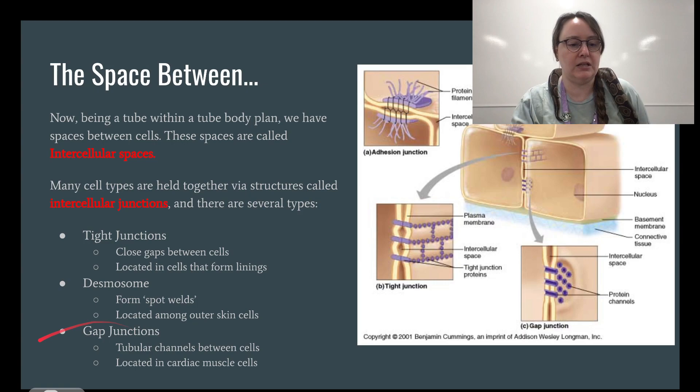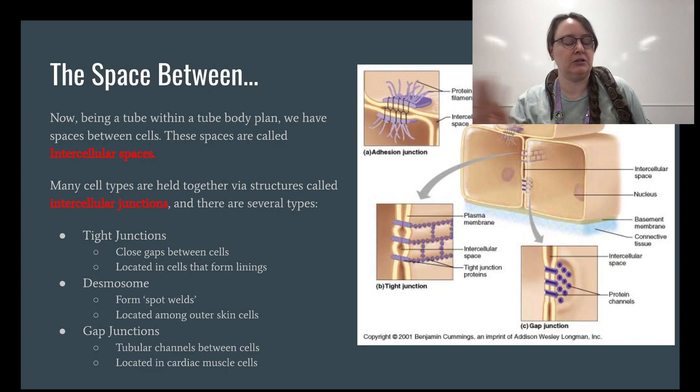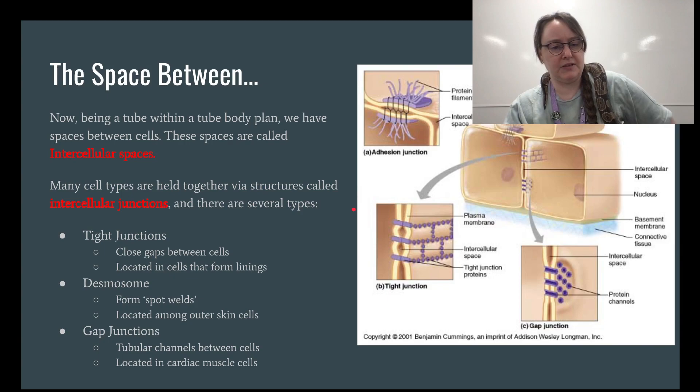There are several different types of intracellular junctions. The three that your book goes over are the tight junctions, the desmosome, and the gap junctions. They also have different names on occasion depending on which textbook you're using — same thing, different name — so you'll hit that a lot in this course.